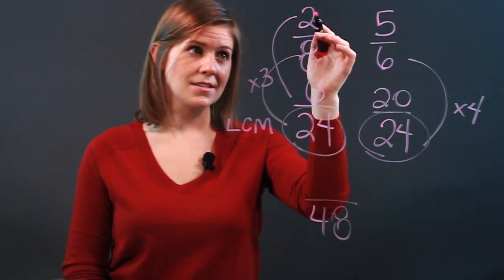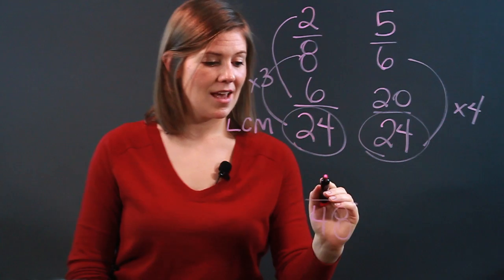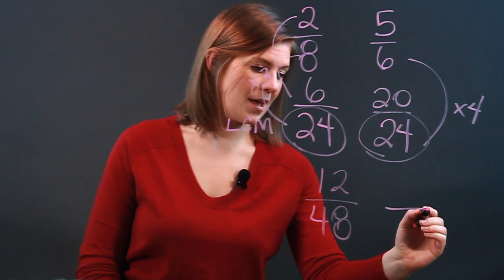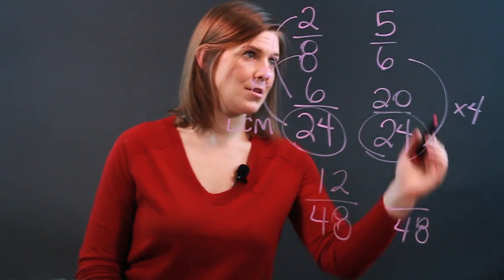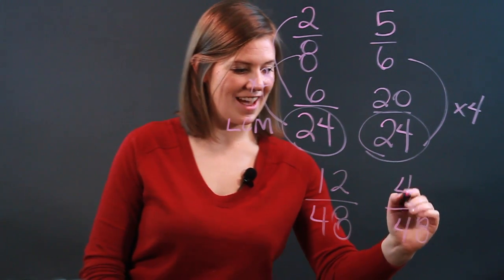And since 8 multiplied by 6 to get 48, then the 2 will also have to multiply by 6 and we'll get 12. And here we have 6 multiplied by 8 to get 48, and so the 5 will also have to multiply by 8, and so we get 40.